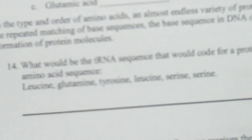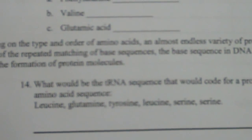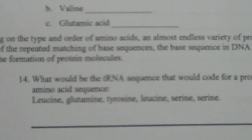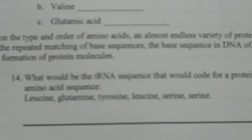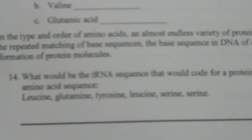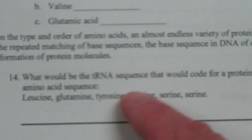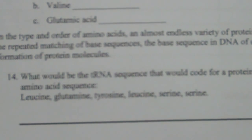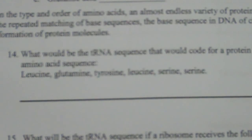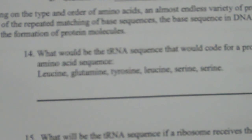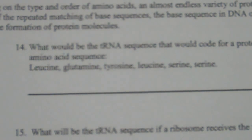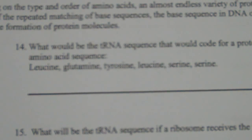Question 14 says: what would be the tRNA sequence that would code for a protein consisting of the following amino acid sequence? Leucine, glutamine, tyrosine, leucine, serine, serine. I don't expect that you can necessarily read what's on the screen, but I do want you to be following along on this lab. For question 14, they're giving you an amino acid called leucine first.